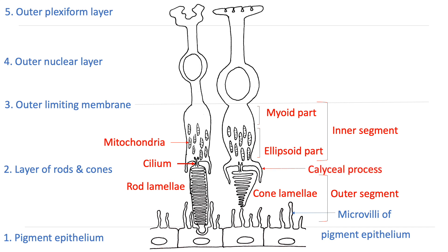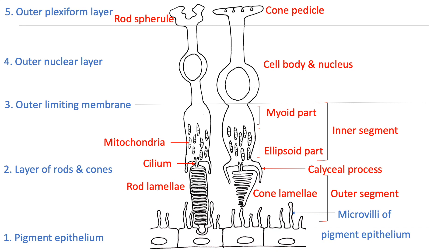In the outer nuclear layer, cell bodies and nuclei of retinal rods and cones are seen. The cone nuclei stain lightly, are larger and more oval than rod nuclei, and also have a thicker segment of cytoplasm surrounding them compared to the rod nuclei. In the outer plexiform layer, the inner processes of rods and cones are expanded to form rod spherules and cone pedicles.